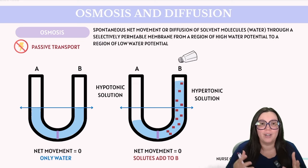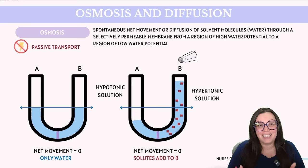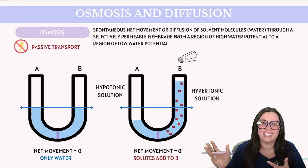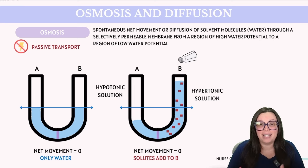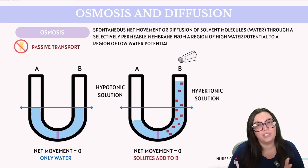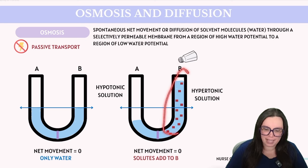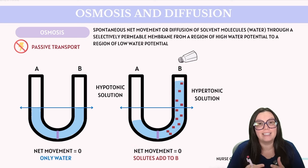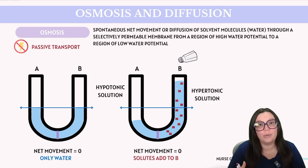Here's a key term to remember: side B is described as hypertonic, meaning it has a higher solute concentration. It's important to note that calling something hypertonic always involves a comparison — side B is hypertonic relative to side A because it contains more solutes. We can also refer to side A as hypotonic. The mnemonic 'hypo rhymes with low' can help you remember that hypotonic areas have a lower solute concentration compared to their counterparts.